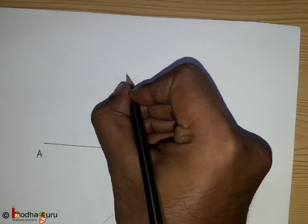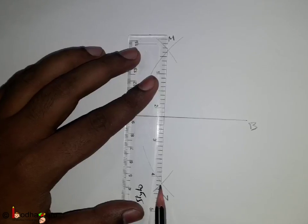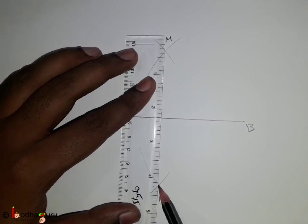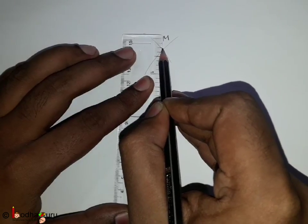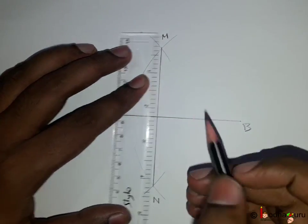Now, we get two points of intersection, say M and N. If we join these points, then we will get a perpendicular bisector of line segment AB.